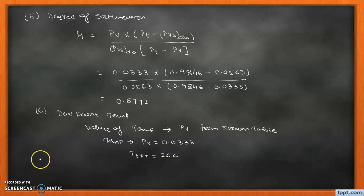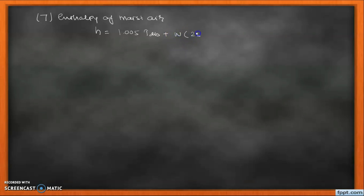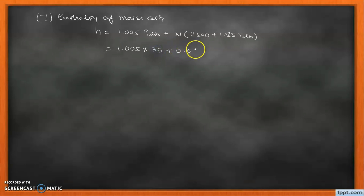Last is enthalpy. We calculate the enthalpy of moist air using the formula: h = 1.005 × Tdb + W × (2500 + 1.85 × Tdb). Substituting values: h = 1.005 × 35 + 0.0215 × (2500 + 1.85 × 35), giving the enthalpy of moist air in kJ per kg of dry air.